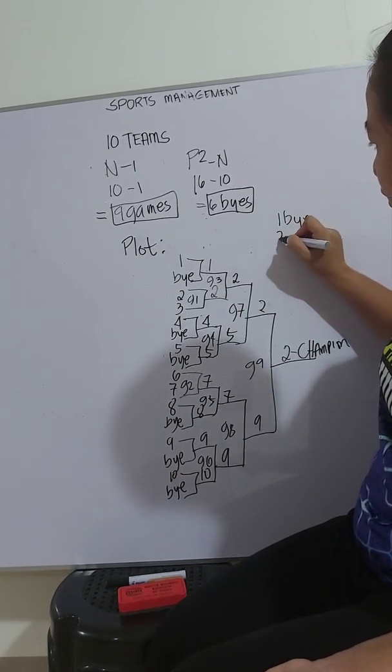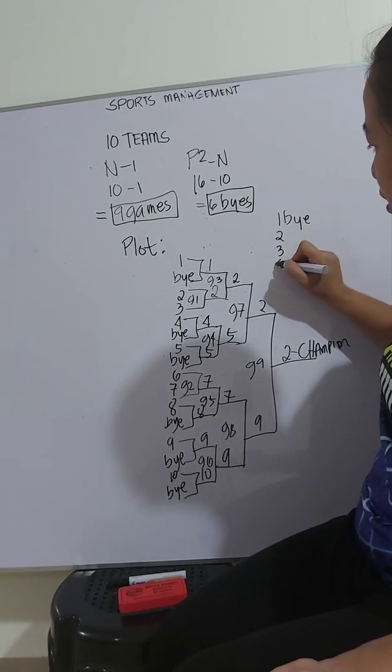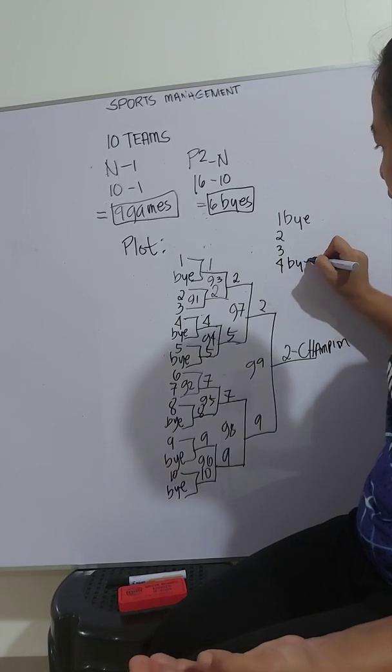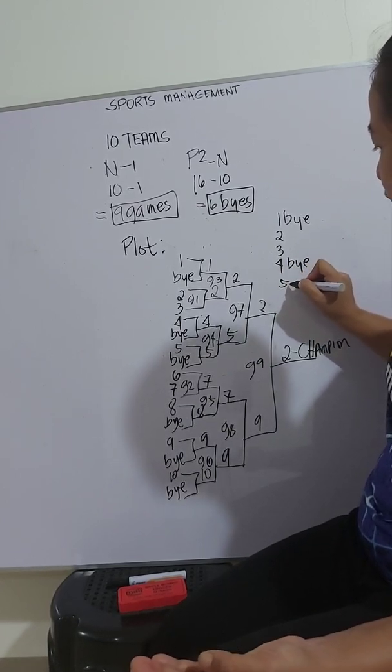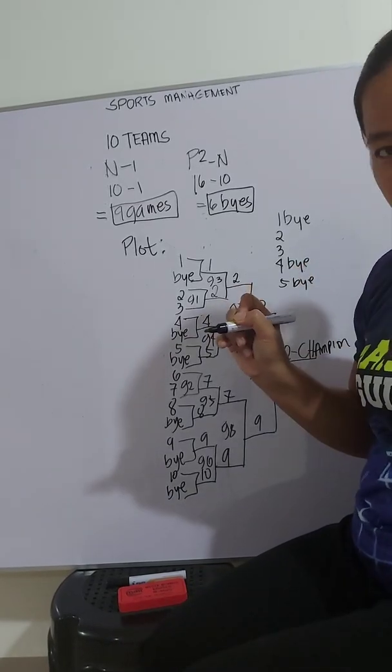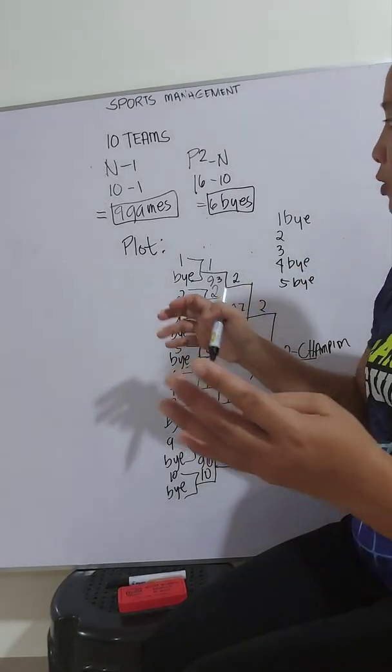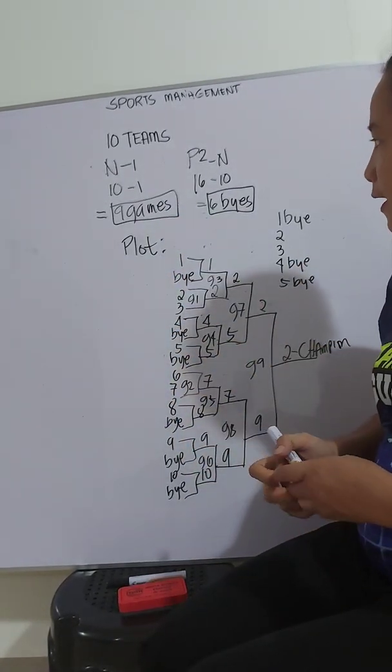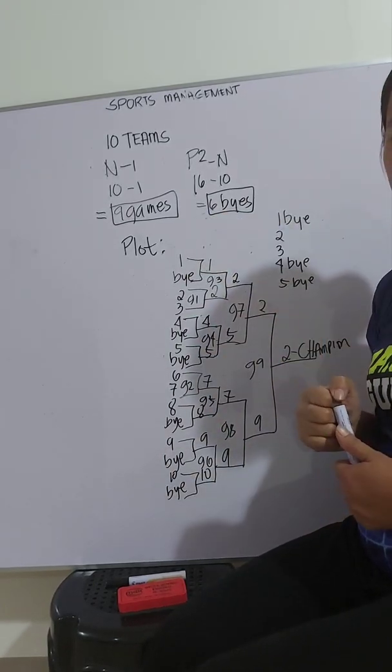1, bye. 2, 3. 4, bye. 5, bye. It's still the same. As long as you can come up with 9 games and 6 byes.